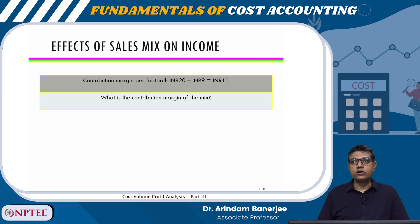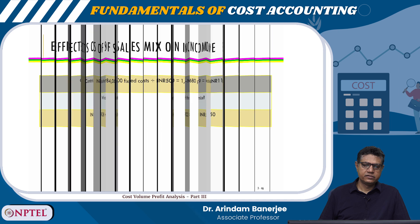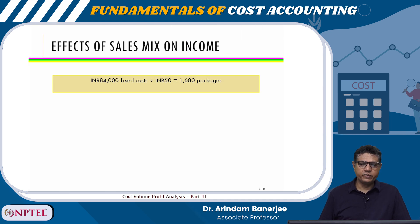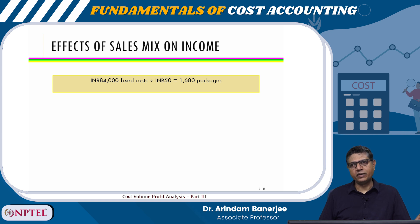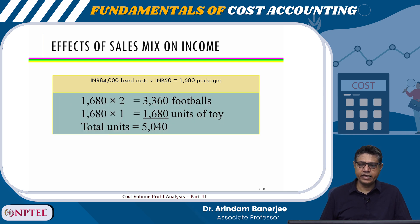The contribution margin on the mix is ₹28 (for one toy) plus 2 × ₹11 (for two footballs), which equals ₹50. On the sales mix, fixed cost of ₹84,000 divided by ₹50 contribution gives 1,680 packages — where one package is one toy plus two footballs. The company needs to sell 1,680 packages to break even.